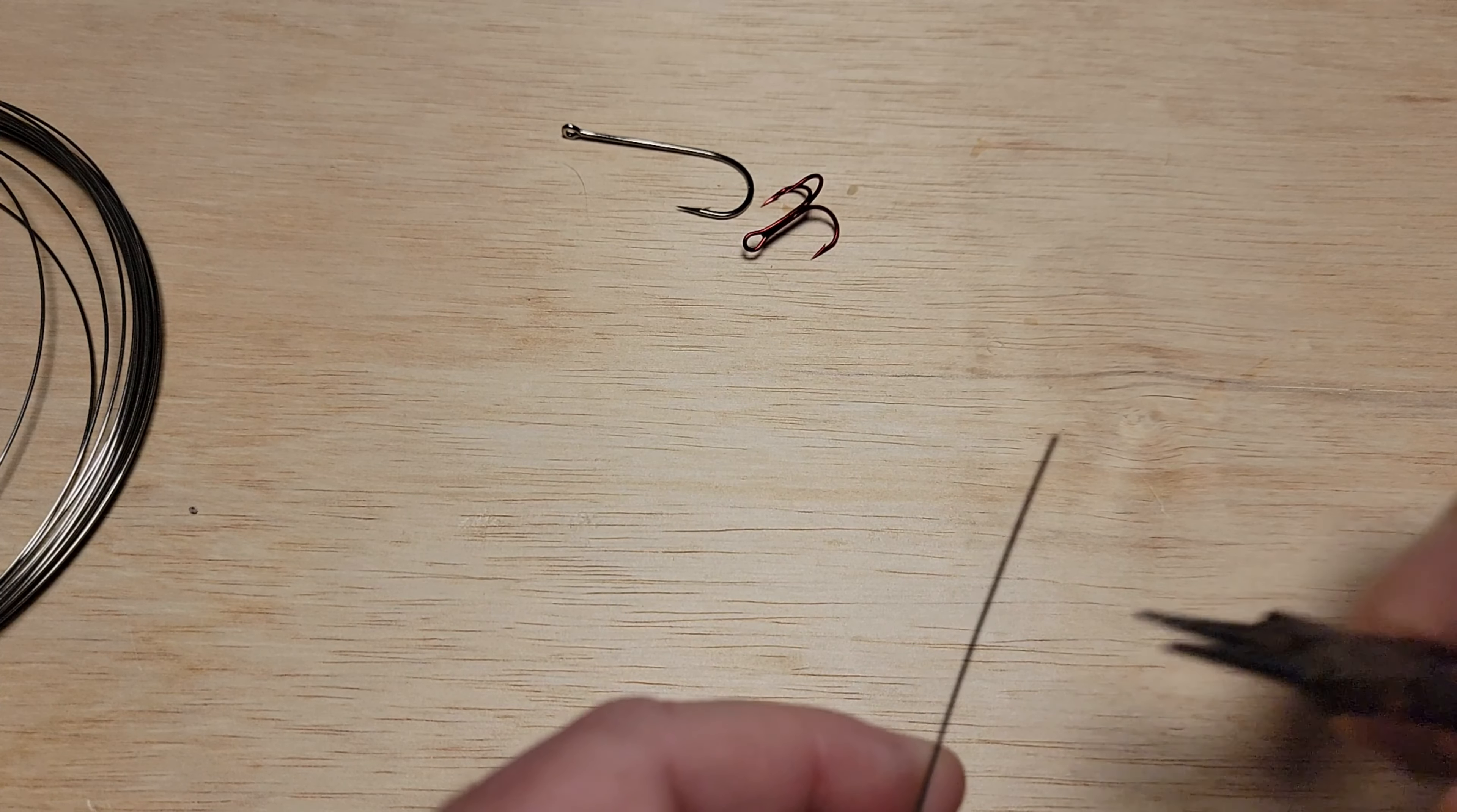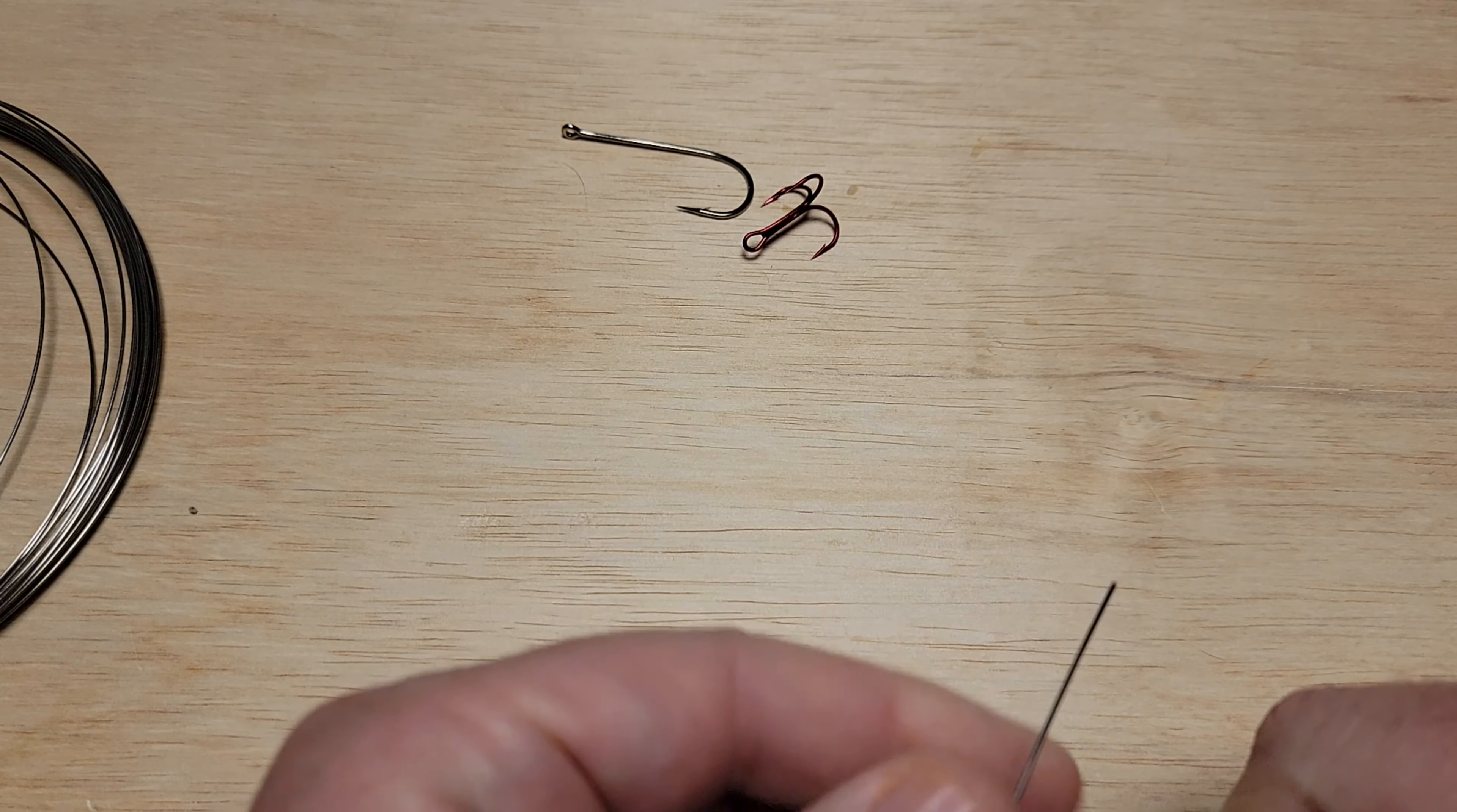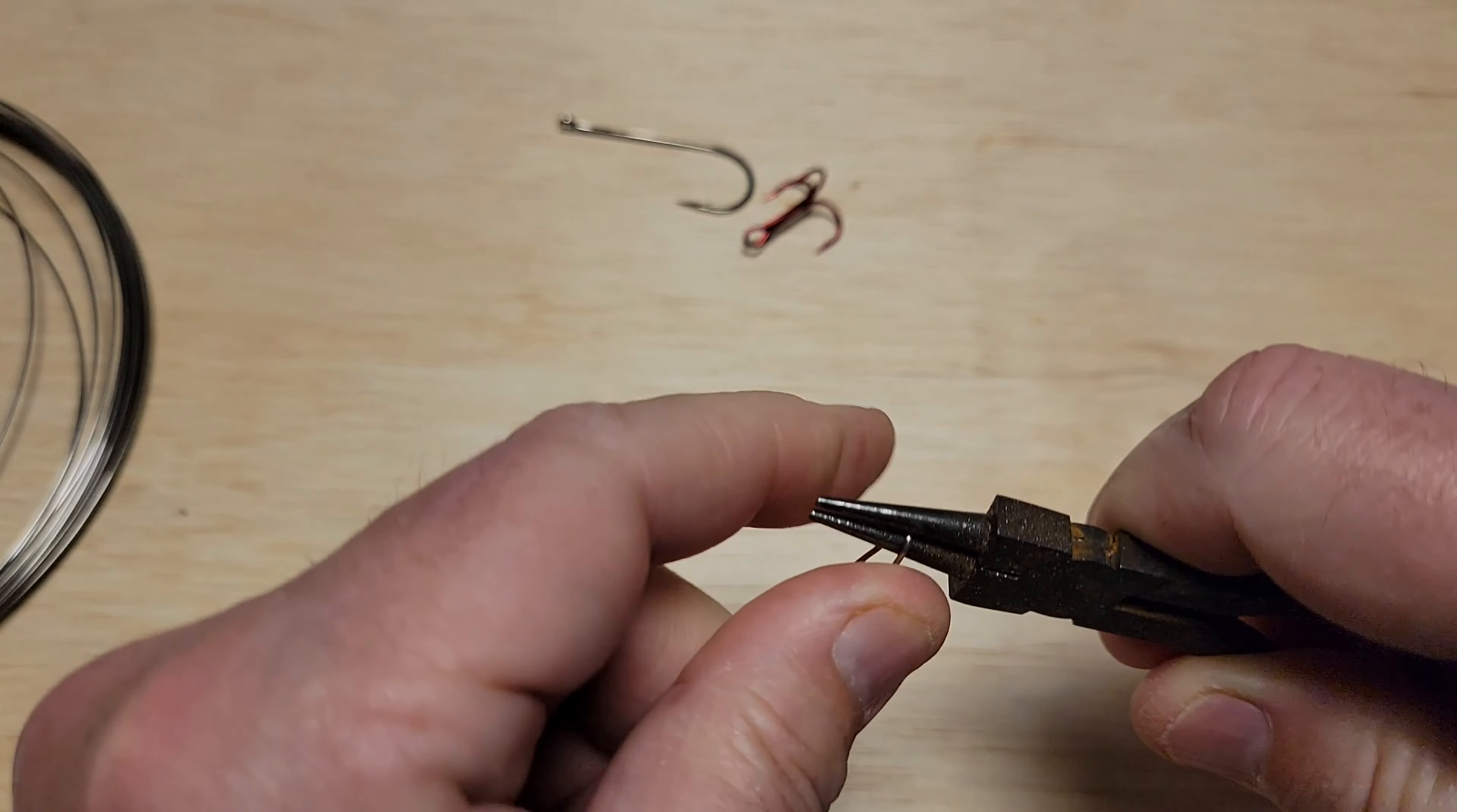Alright, so first method I use to attach a hook is for a treble hook. I've probably used this even more than 99% of the time I'm doing that treble hook on an inline spinner.